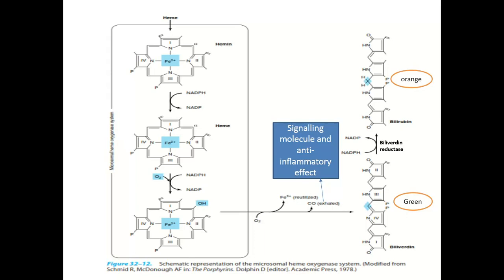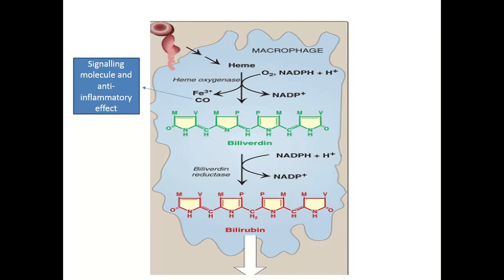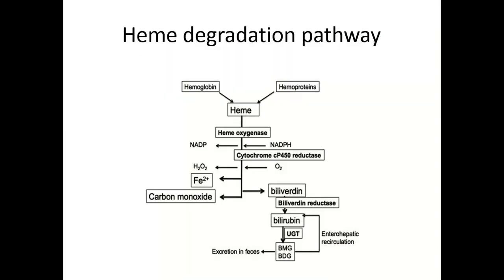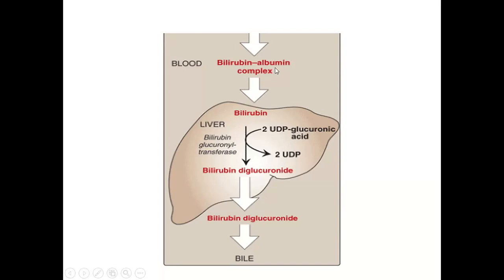The Heme Oxygenase System is an NADPH system required for the degradation of heme into bilirubin. Both biliverdin and bilirubin are bile pigments and both are colored compounds. They have least solubility in water, so that requires some treatment for solubility in the blood circulation — either they may complex with albumin for solubility in the blood, or they are conjugated with the conjugating molecule glucuronic acid and excreted in the bile.